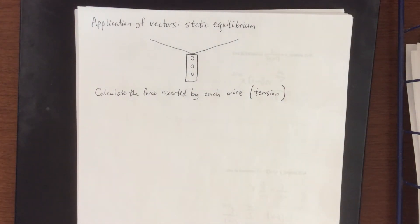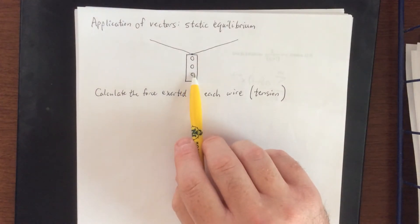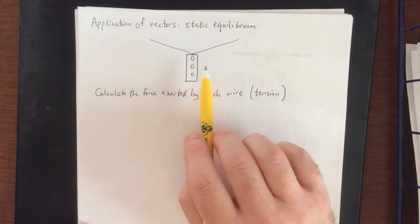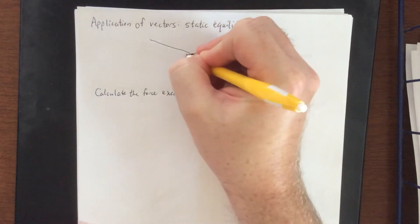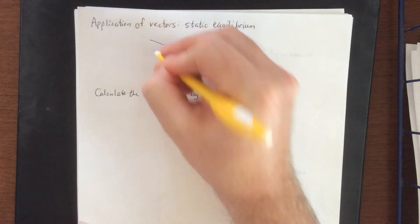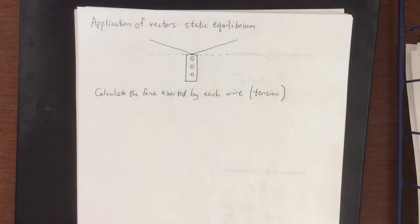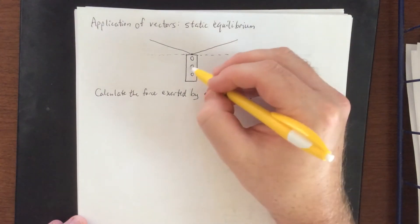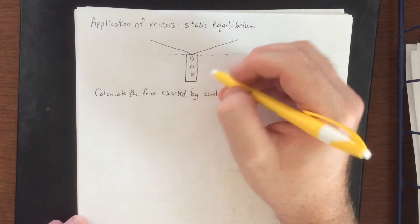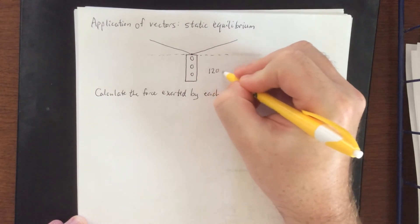In SI units, force usually has units of newtons. However, in imperial units — hashtag murica — that would have units of pounds. So if we know how much the average traffic light weighs, we can calculate the tension in each of these wires, assuming we have the angle each wire creates with the horizontal. Let's just call the weight 120 pounds.